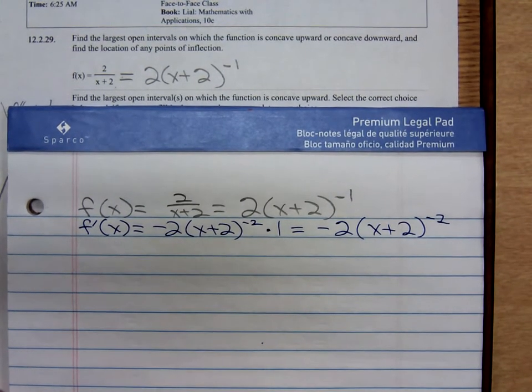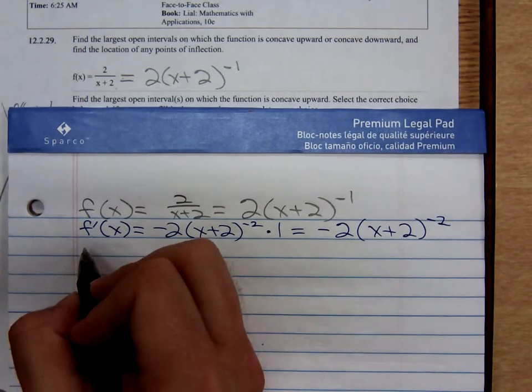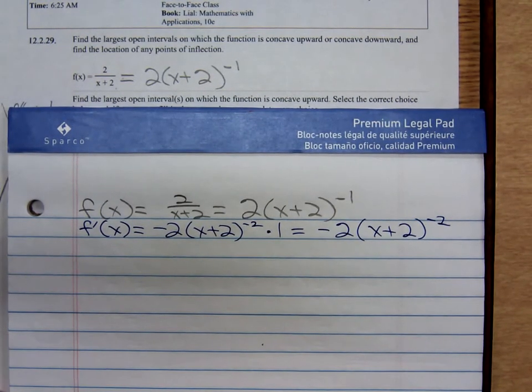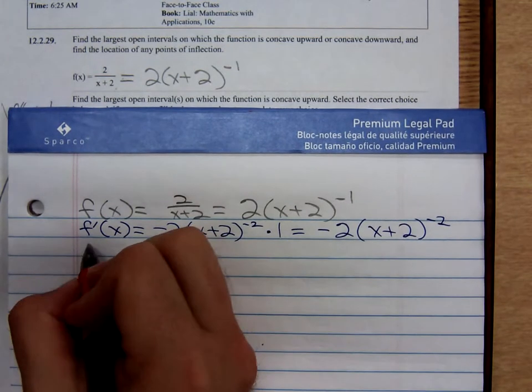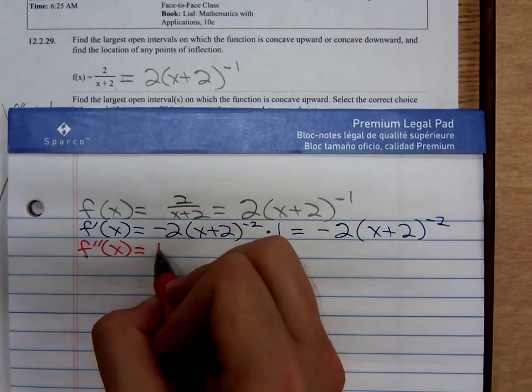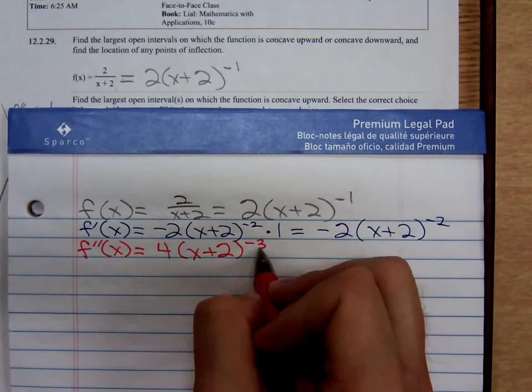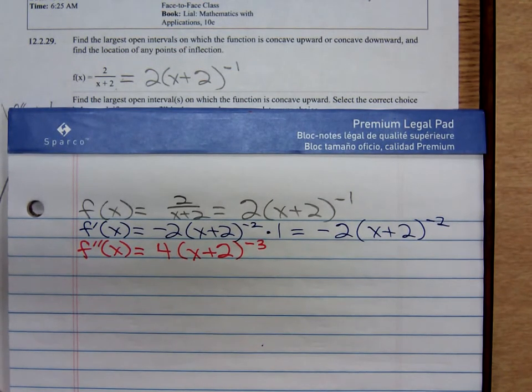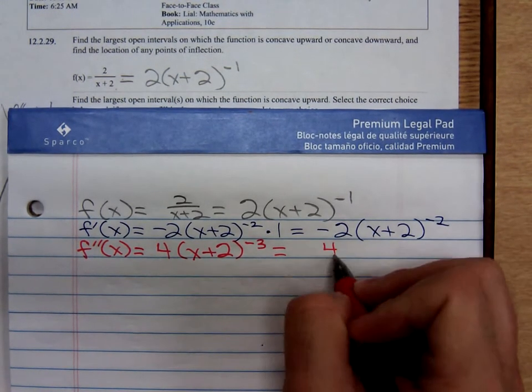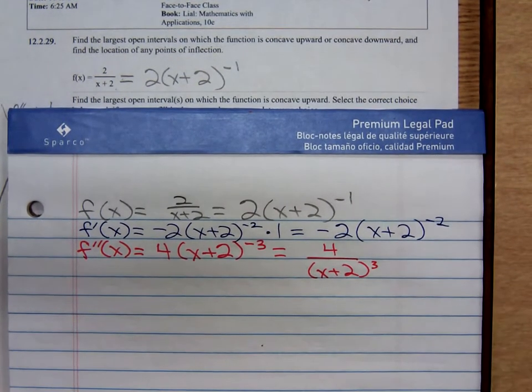Then I would find f double prime. Let me get another color. I will find f double prime finding the second derivative that will become a 4 times x plus 2 to the negative 3. And it might be helpful to rewrite that using a positive exponent. That's the same thing as 4 over x plus 2 to the positive 3 power.